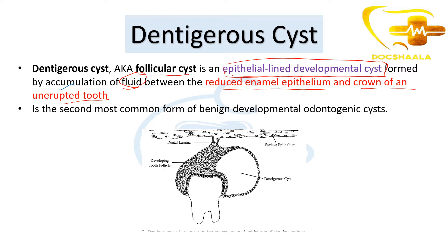As you can see in the picture, this is a tooth which is not yet erupted. This is the surface epithelium and this is the dental lamina — the developing tooth follicle. A cystic cavity is being formed in between the surface epithelium, dental lamina, and the developing tooth follicle. This is what we call a dentigerous cyst. It is the second most common form of benign developmental odontogenic cyst.